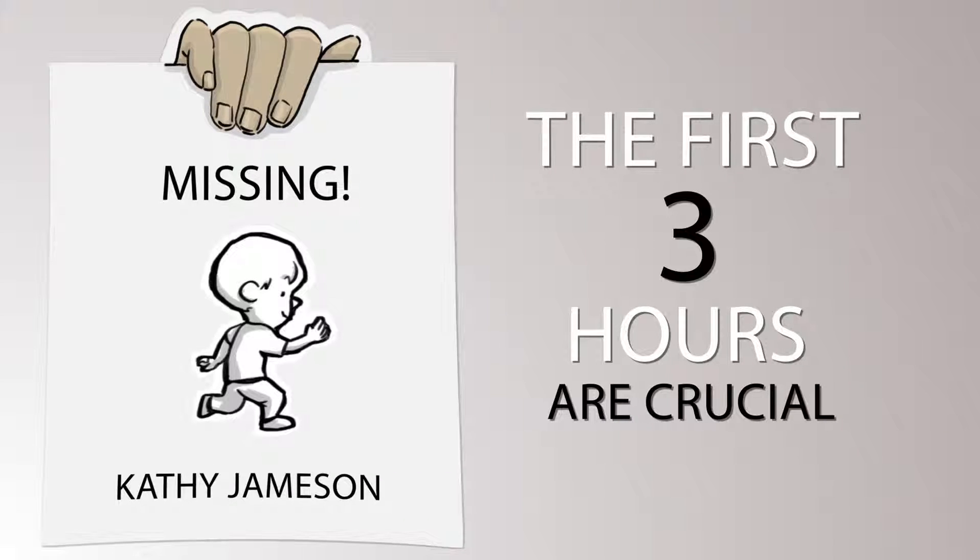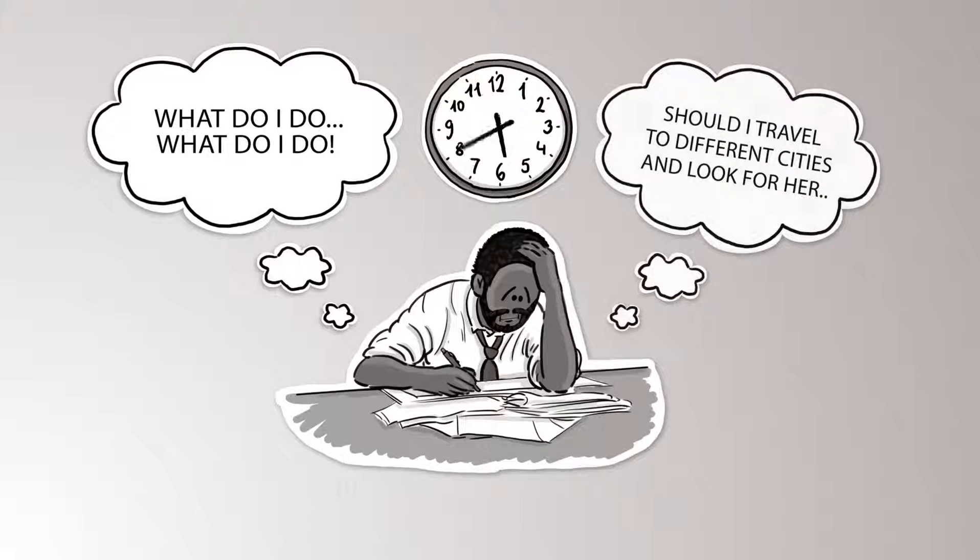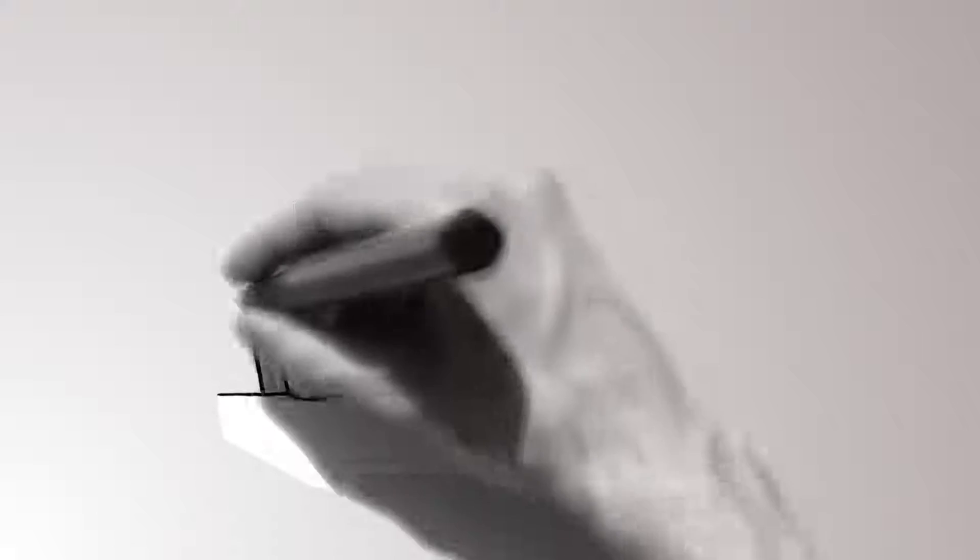A parent under panic or stress tends to make bad decisions and lose structure in organized searching. The parent starts searching randomly, asks around, calling out the name of the child.